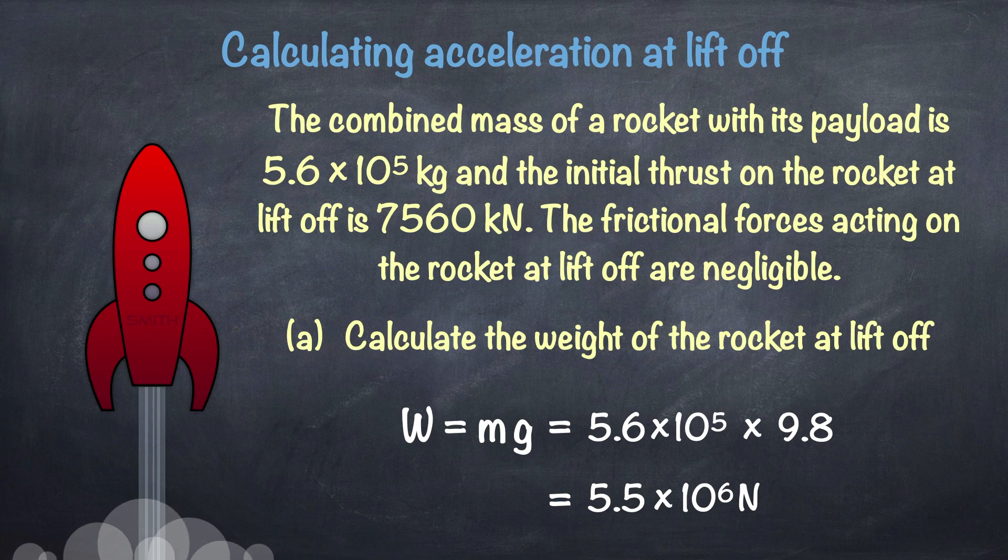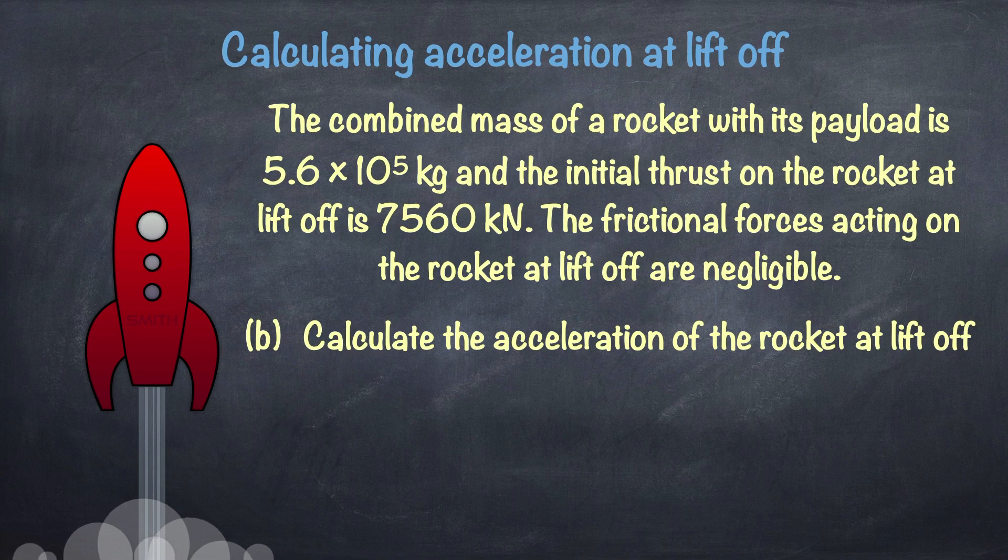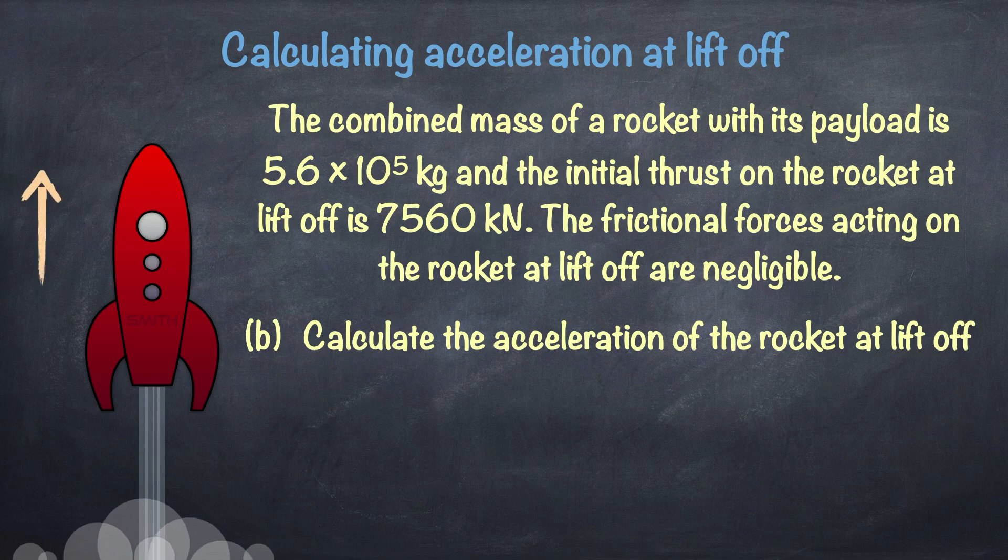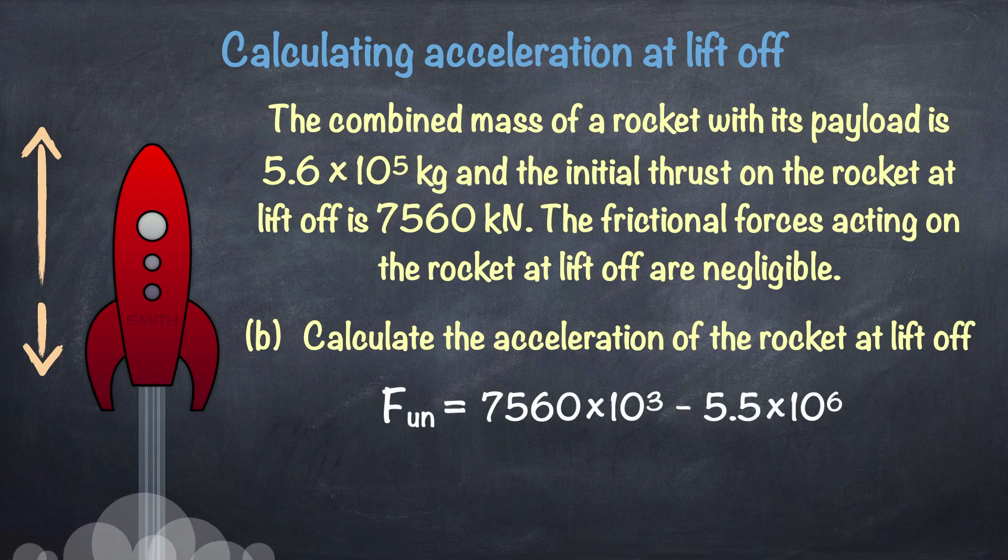Part B of the question asks us to calculate the acceleration of the rocket at liftoff. So for that, we need to consider the vertical forces acting on the rocket at liftoff. Those are the thrust upwards and the weight downwards. Using those two forces, we can first calculate the unbalanced force acting on the rocket, which works out to be 7,560 times 10 to the power of 3 newtons, that's the thrust force,